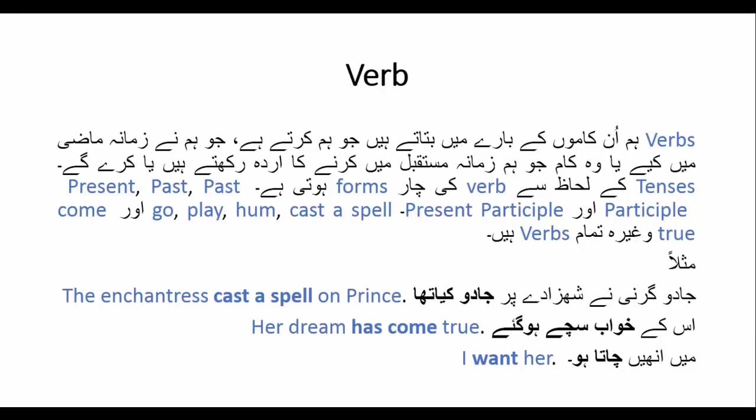Verb ان کاموں کے بارے میں بتاتا ہے جو ہم کرتے ہیں، جو ہم نے ماضی میں کیے، یا جو ہم مستقبل میں کریں گے۔ یعنی verb وہ کام ہے جو ہم کرتے رہتے ہیں، کر چکے ہیں، یا کرنے کا ارادہ رکھتے ہیں۔ Tenses کی رو سے verb کے چار forms ہوتے ہیں۔